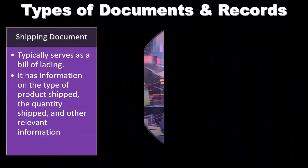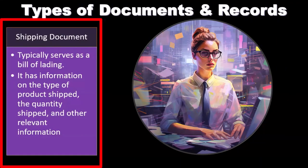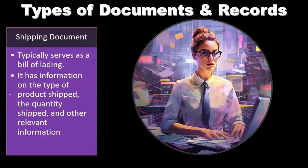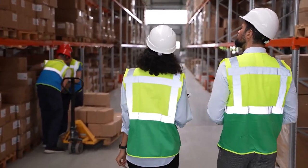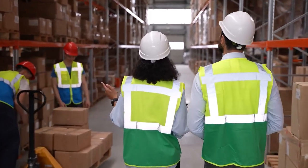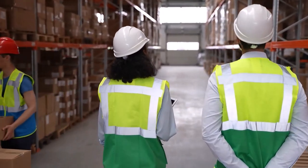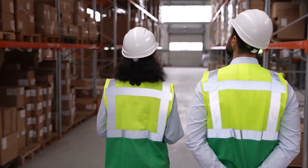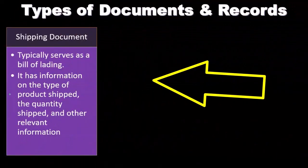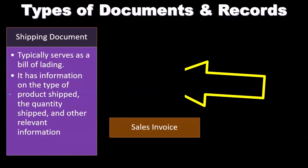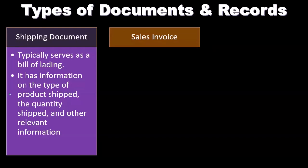The shipping document typically serves as a bill of lading. It has information on the type of product shipped, the quantity shipped, and other relevant information. We want to check those shipping documents because for goods being shipped out, shipping is often the point at which we recognize revenue. Revenue for goods sold typically happens when the goods are delivered. If goods are shipped from a warehouse, we look at the shipping document to know the quantity and when shipping took place, and therefore tie that out to when revenue was recognized.